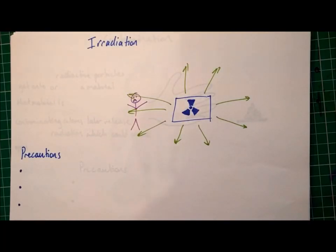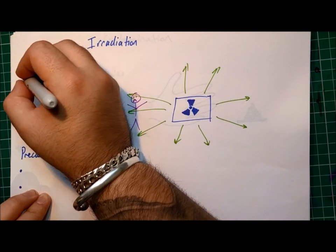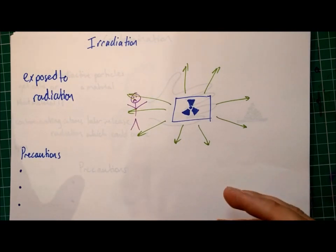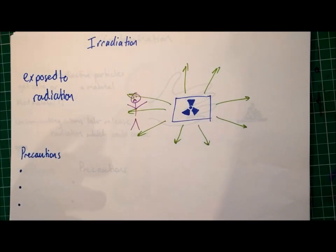Hello, today we're going to talk about irradiation and contamination. So firstly, irradiation. Irradiation is when a person or a material is exposed to radiation.